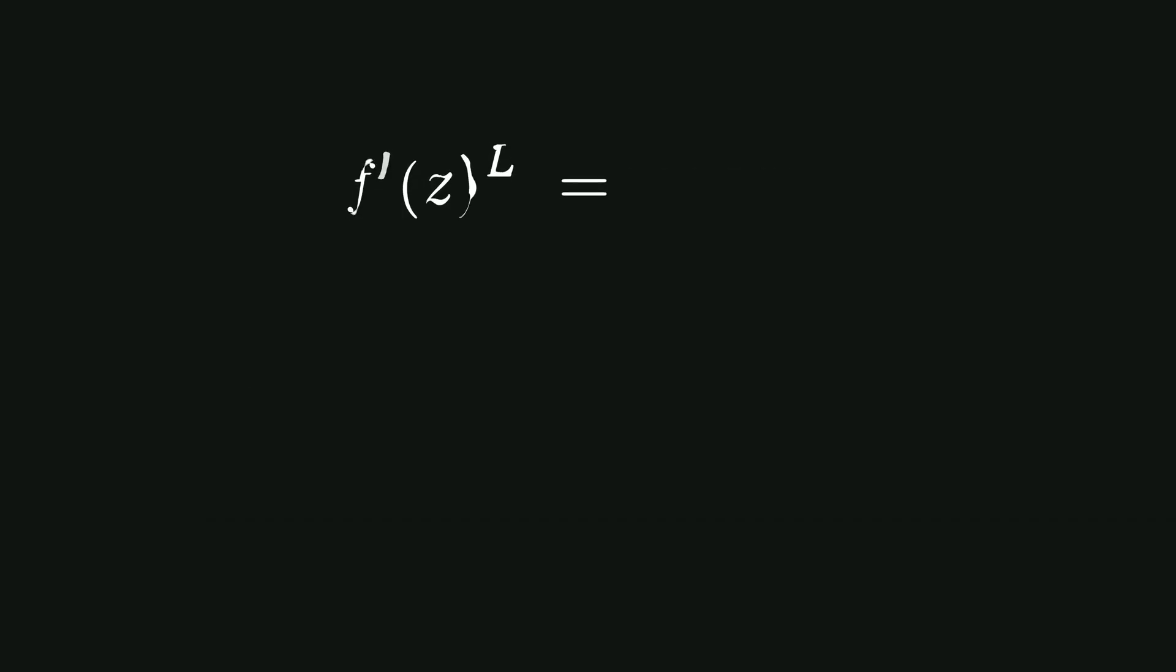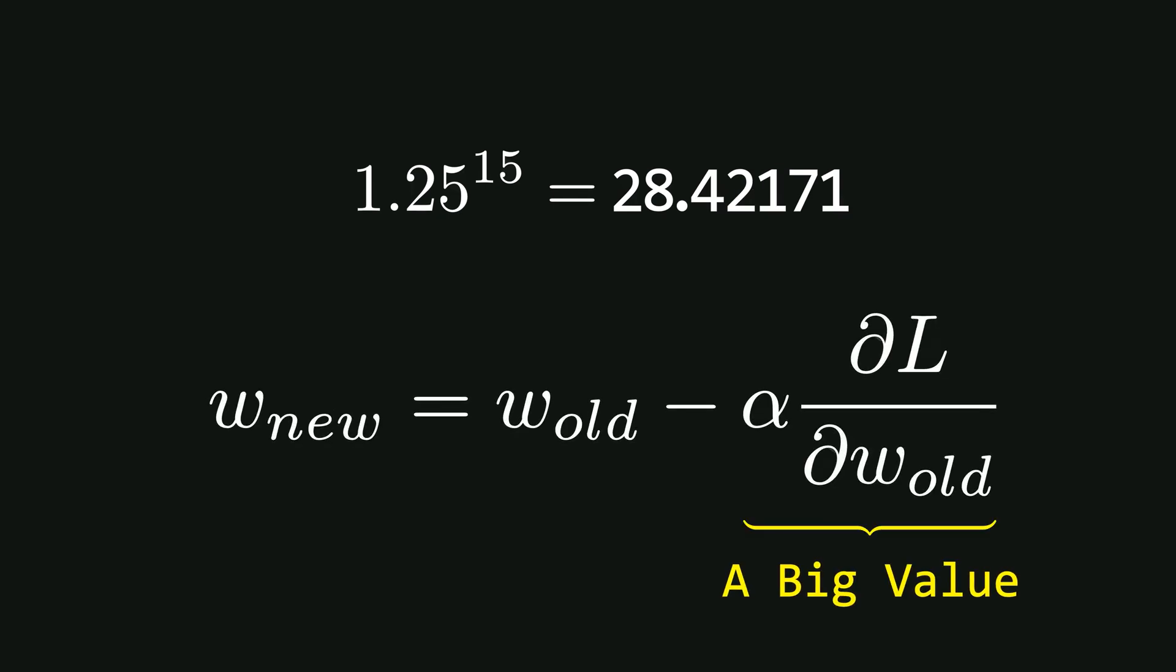On the other hand, imagine the derivative value is greater than 1, like 1.25. As we go deeper into the network, the gradient grows very rapidly. This causes the product of derivatives to become extremely large, leading to huge and unstable weight updates. This is called the exploding gradient problem.